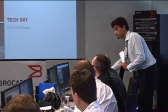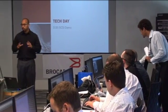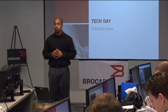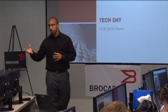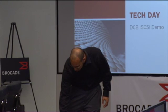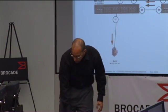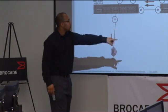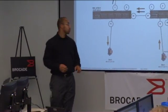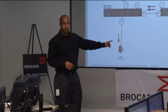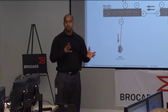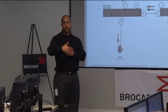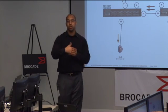I'm going to show a quick demonstration of DCB iSCSI running from server to storage. Looking at the topology, we have two hosts connected to one switch. One is running DCB iSCSI traffic. The other is running network traffic, which we'll inject to apply congestion and show how DCB iSCSI will be set to one priority and enforced to its own bandwidth.